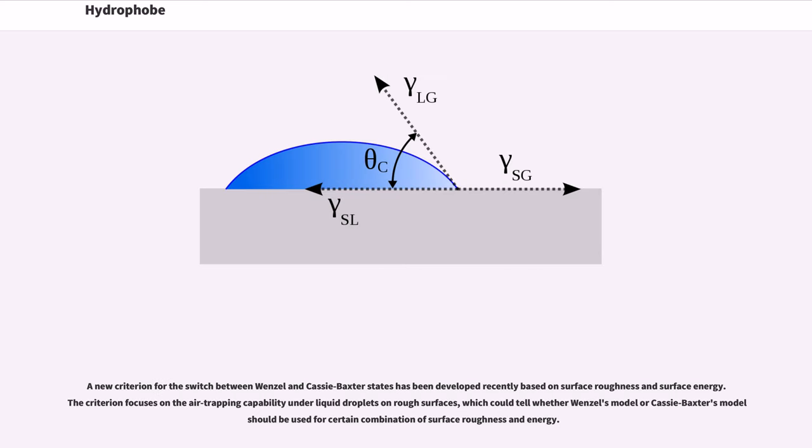A new criterion for the switch between Wenzel and Cassie-Baxter states has been developed recently based on surface roughness and surface energy. The criterion focuses on the air trapping capability under liquid droplets on rough surfaces, which could tell whether Wenzel's model or Cassie-Baxter's model should be used for certain combination of surface roughness and energy.